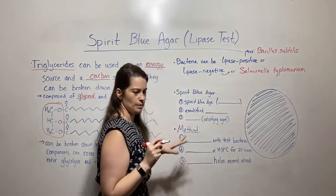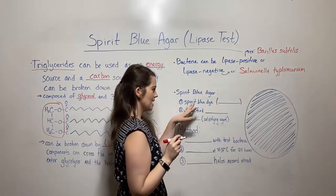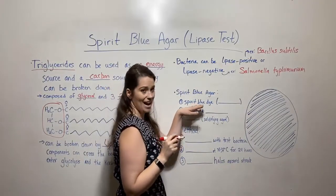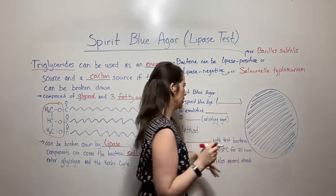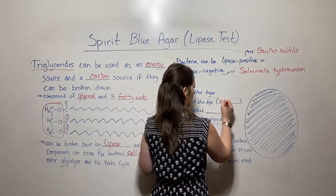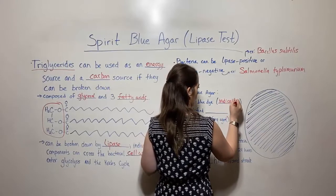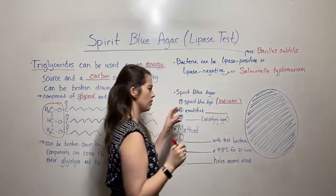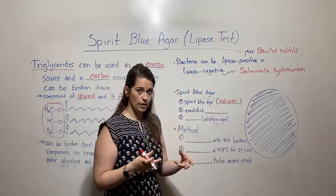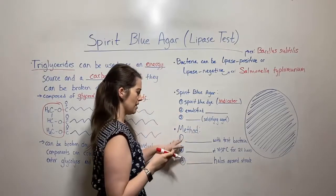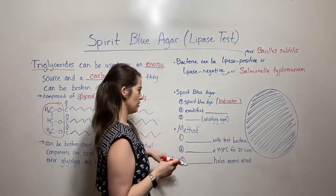Now let's talk about the spirit blue agar. It has a dye in it called spirit blue dye, which makes it blue. That is our indicator, meaning that a change to the spirit blue dye is going to tell us whether lipase is present or not.